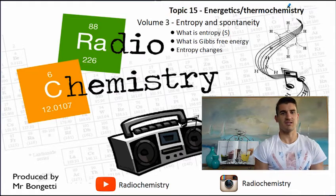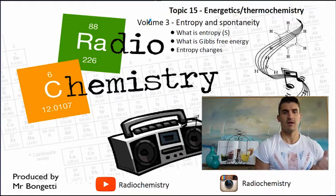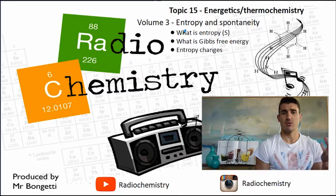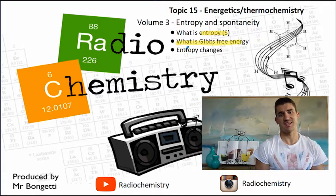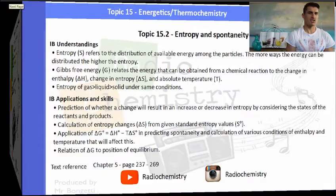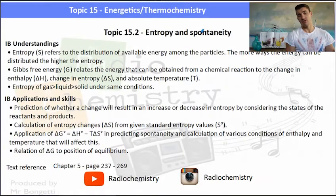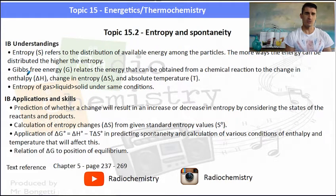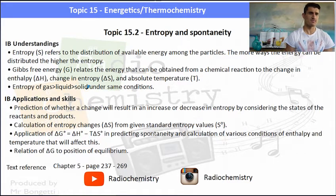Volume 3: Entropy and Spontaneity. We talk about entropy, which is given the symbol S. We look at what Gibbs free energy is, and then we discuss entropy changes. IB understandings, applications, and skills revolve around entropy, Gibbs free energy, and doing some calculations for those two things. We need to be able to make predictions based on change in entropy and change in delta G.